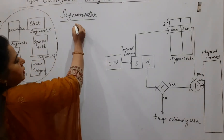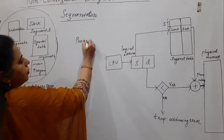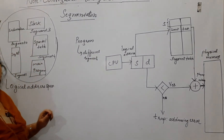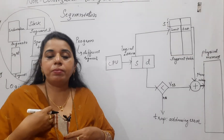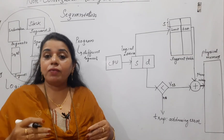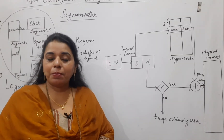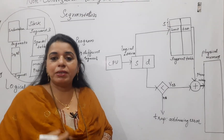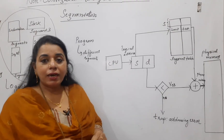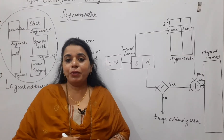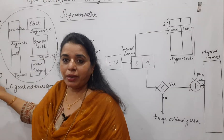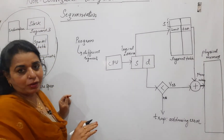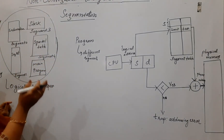The word segmentation means you have a program and that program has different segments. Normally, from the user's point of view, it is more convenient if you can say that your program consists of so many segments and each segment is placed at a specific location in the main memory. In paging, the user's view is mapped onto physical memory, but in segmentation it is not like that — segmentation supports the user's view of memory.